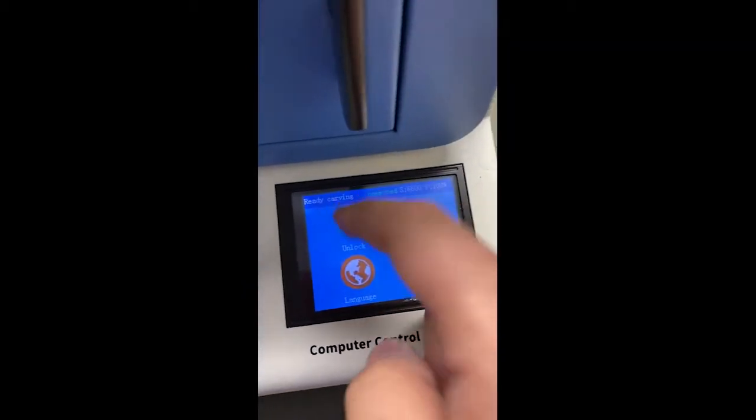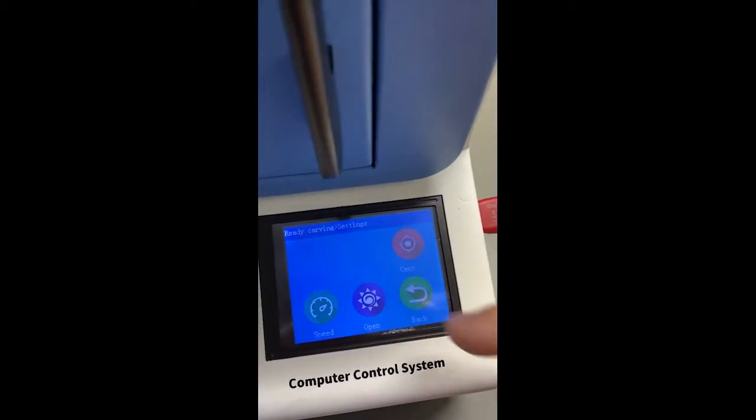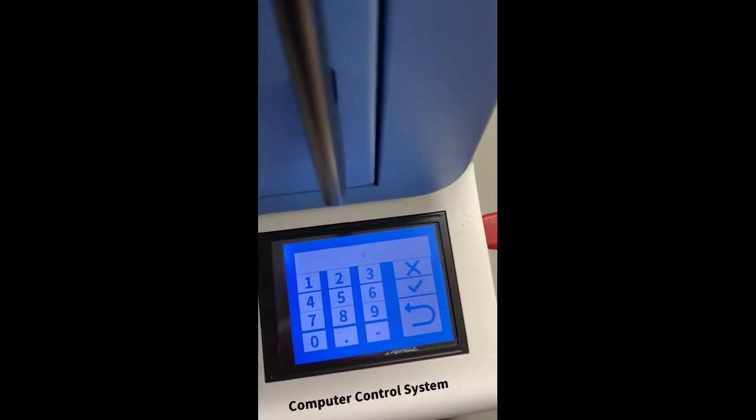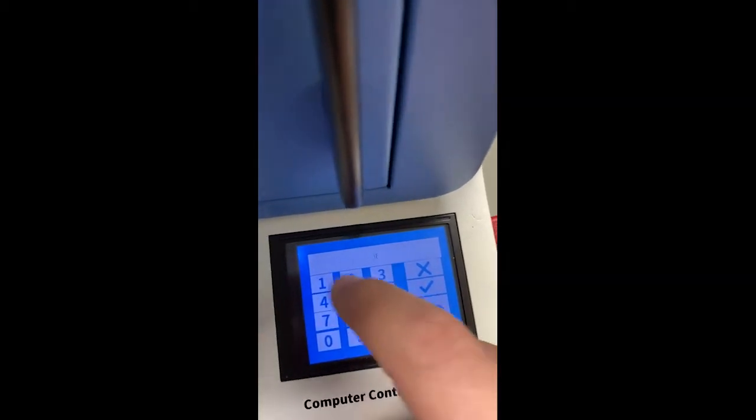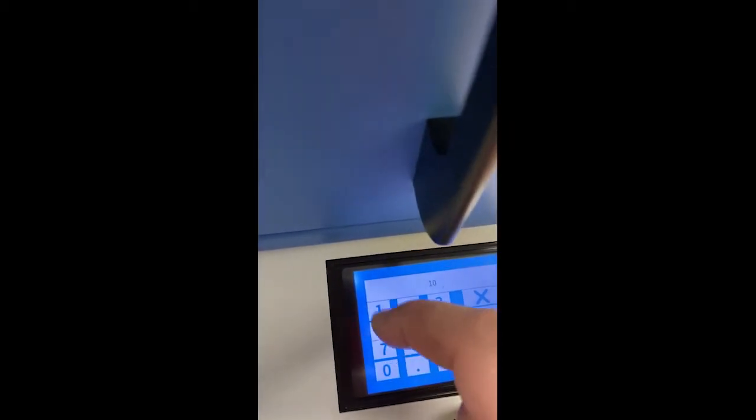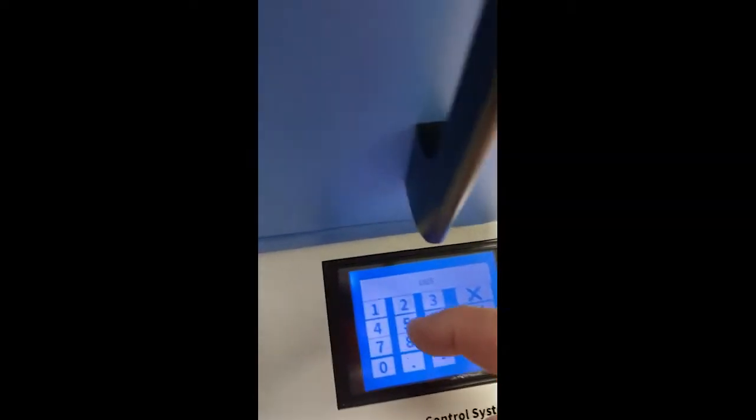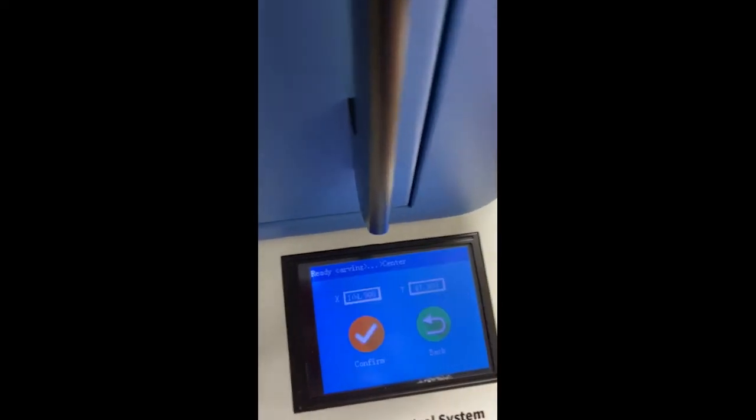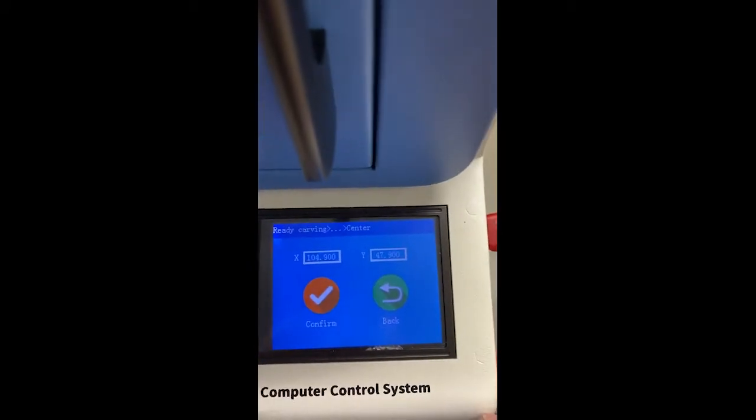You have to hit unlock first to interact with the machine. You're going to hit settings, center, then the password to get into the system is 101515.